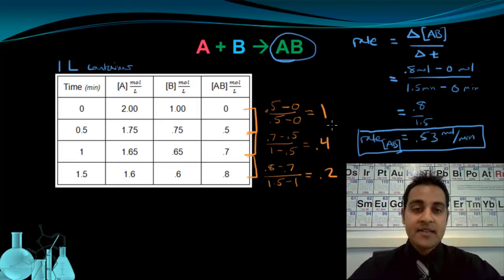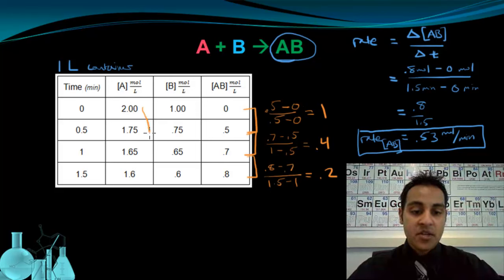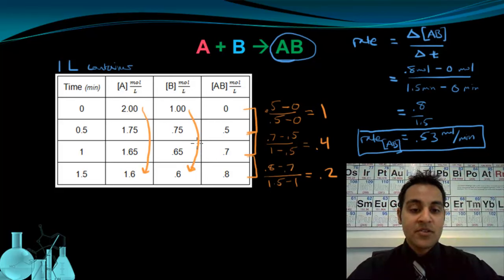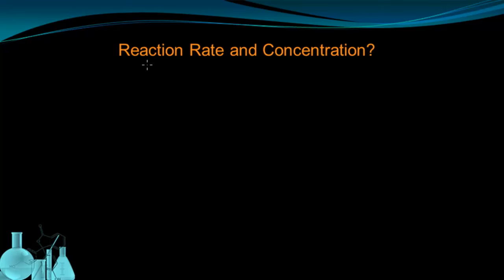What this is showing us is that as the reaction proceeds, the rate is not constant. The reason it's not constant is that it depends on the concentration of the reactants. The rate is decreasing, and so is the concentration of the reactants — both are decreasing. So there's a connection between the concentration of the reactants and the rate of reaction that we're going to explore further.